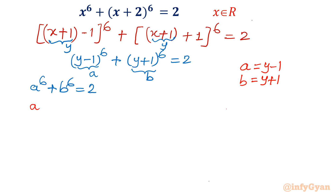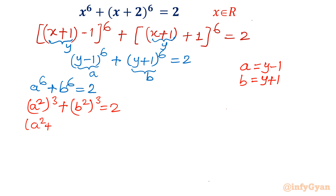We can write a⁶ as (a²)³ and b⁶ as (b²)³. Using the identity a³+b³ = (a+b)(a²-ab+b²), we expand: (a²+b²)·(a⁴ - a²b² + b⁴) = 2.